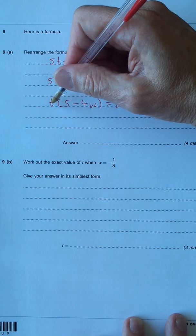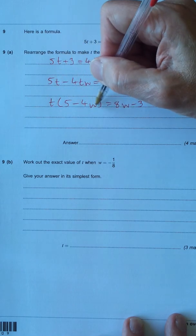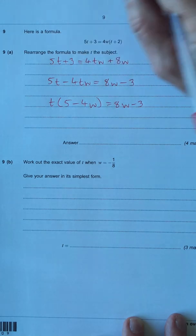Just check it. t times 5 is 5t. t times minus 4w is minus 4tw. So that's correct.